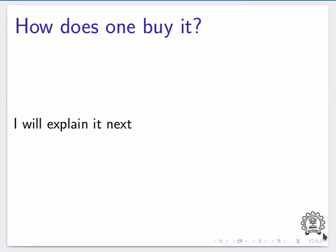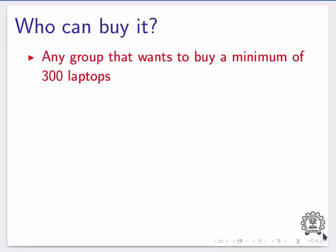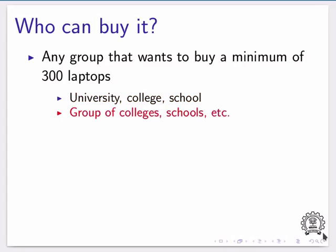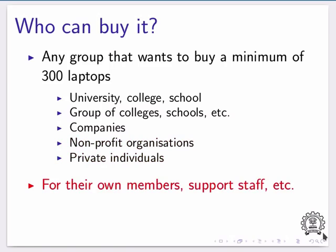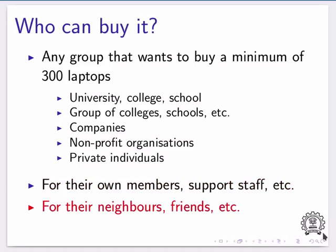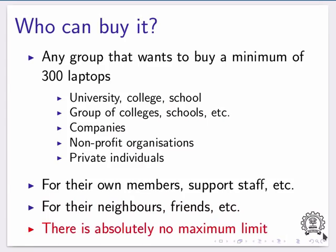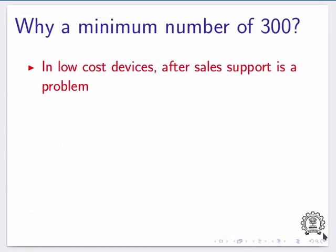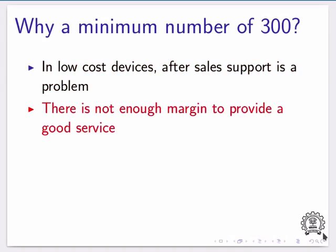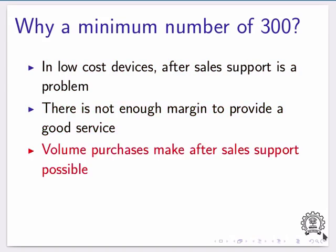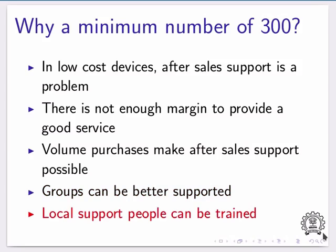How does one buy this laptop? Any group that wants to buy a minimum of 300 laptops can do so — it could be a university, college, school, group of colleges, companies, non-profit organizations, or in fact anybody for their own members, support staff, neighbors, friends, etc. There is absolutely no maximum limit. The minimum of 300 is required because in low-cost devices, after-sale support is a problem — there is not enough margin to provide good service. Volume purchases make after-sale support possible; groups can be better supported and local support people can be trained.